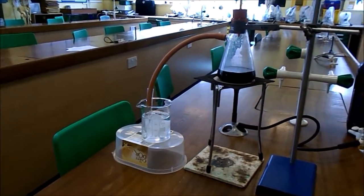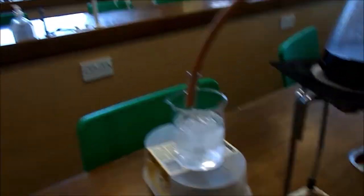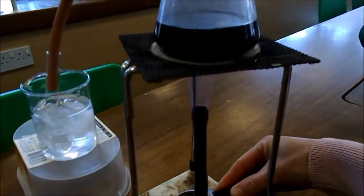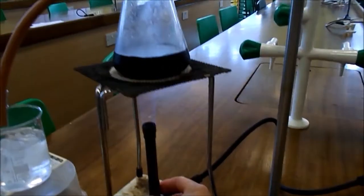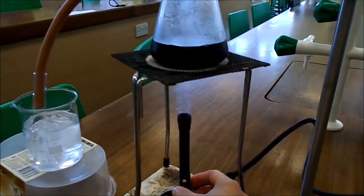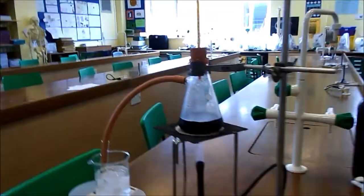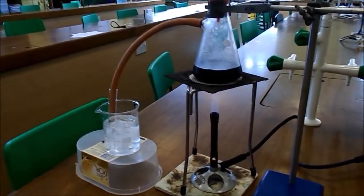We've got our cooled collecting vessel there, so we can bring the Bunsen burner underneath. We're going to turn that onto a roaring flame and then we can observe what's happening.